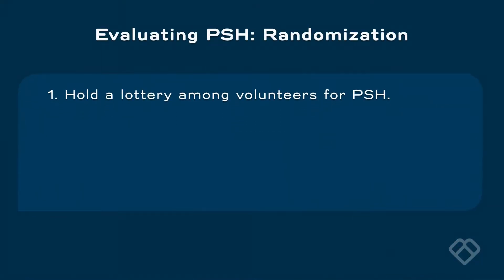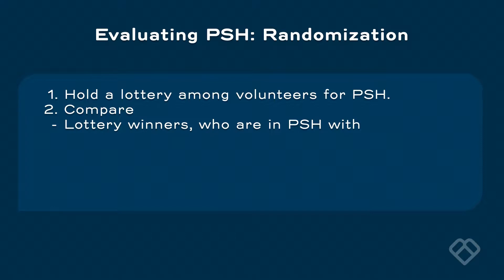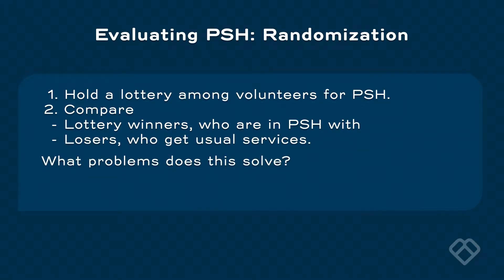Let's take a look at how we do randomization. We hold a lottery among volunteers for permanent supportive housing. We then compare those who won the lottery — who are in permanent supportive housing — with the losers who get the usual services. Assuming we have a large enough group in both the treatment group and the comparison group, people who have characteristics that conduce to success in permanent supportive housing are as likely to be in the treatment group as in the comparison group.